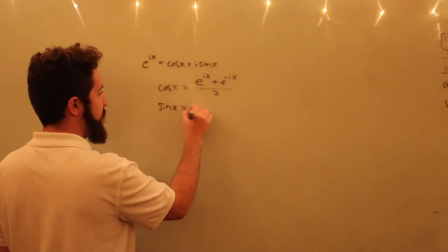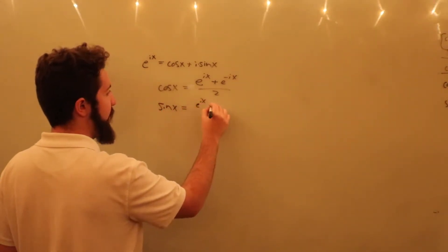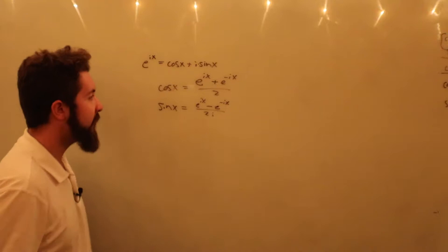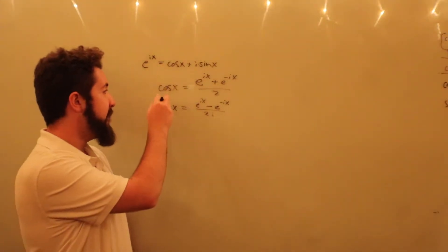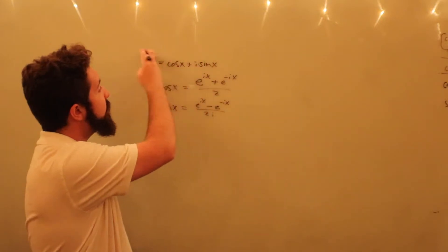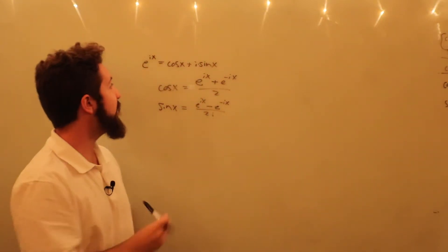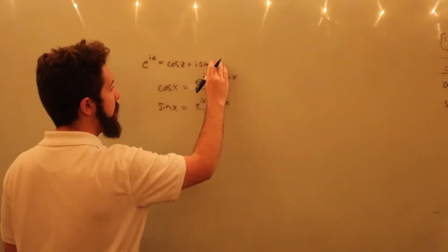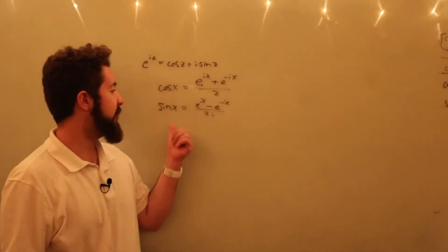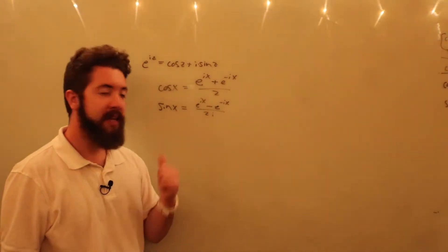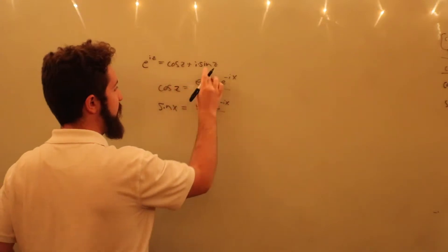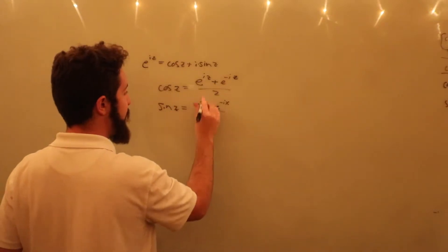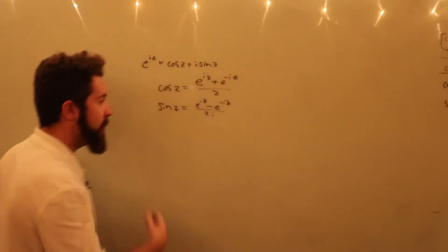Likewise, sine of x is going to be equal to e to the ix minus e to the negative ix, divided by 2i. And we can actually take these identities, because Euler's formula is true for all complex numbers. If we put in a complex number z, this is still true. We can actually define cosine and sine for complex arguments in terms of this, and that makes it quite easy. So we just replace all the x's with z's, where z is now a complex number.